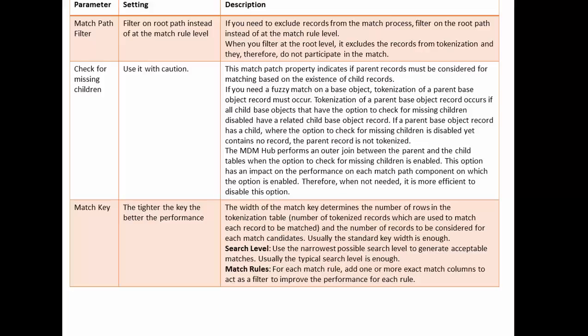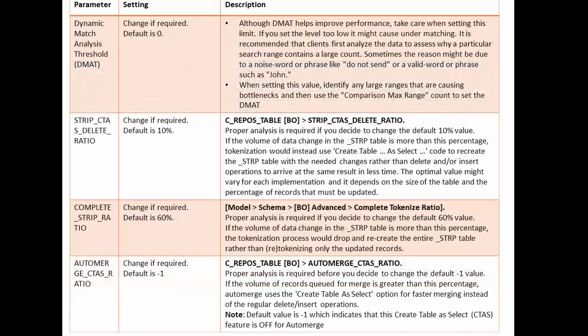For search level, use the narrowest possible search level to generate acceptable matches. The typical search level is usually enough, but when developing the solution you can try different search levels. If the typical search level does not satisfy your business requirement, you can change it. For match rules, each match rule should add one or more exact match columns to act as a filter and improve the performance of each rule.